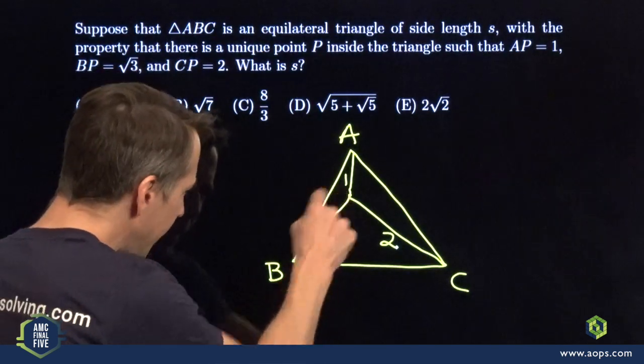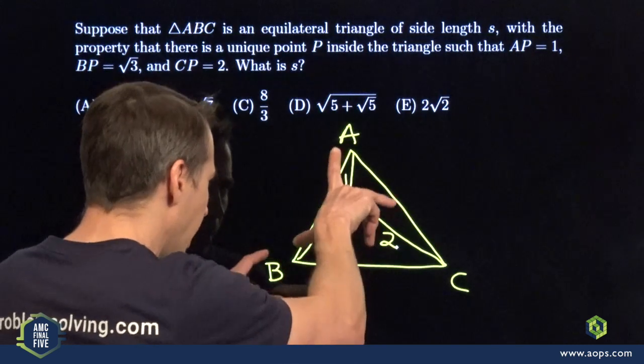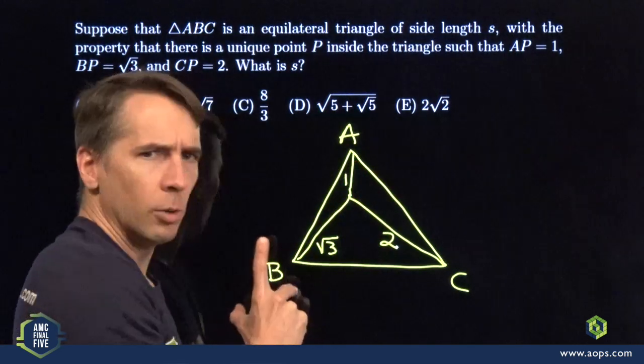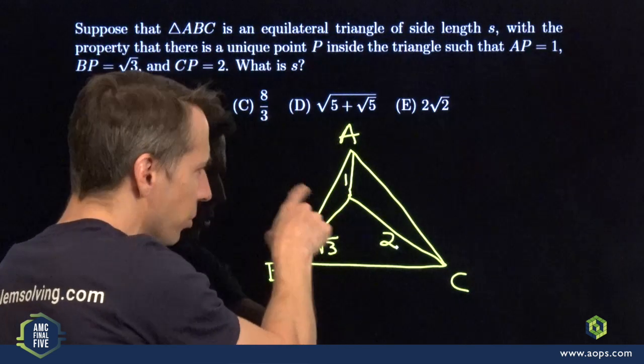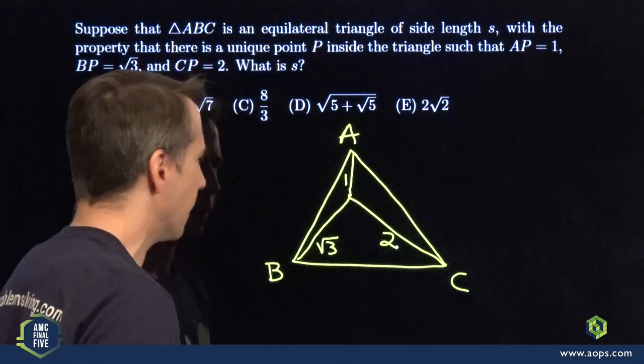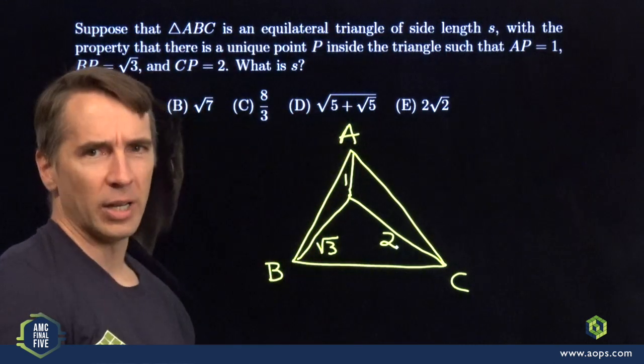If we rotate around P, that point in the middle there, well, the A, B, and C will end up in the middle of nowhere. I don't know what good that'll do. And my one, and my root three, and my two, they'll still be connected to P, and triangles still don't work like that. So I'm going to rotate around A instead.